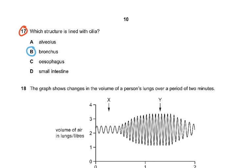Question 17: Which structure is lined with cilia? Alveolus, no cilia. Esophagus, no cilia. Small intestine, no cilia. So only one choice was bronchus.